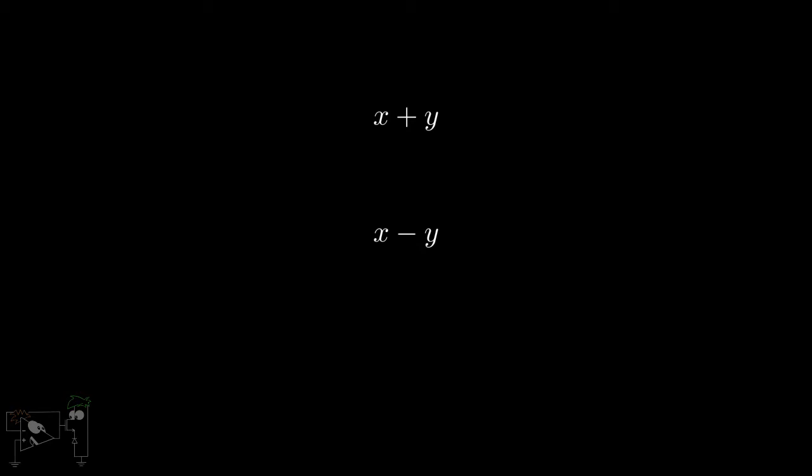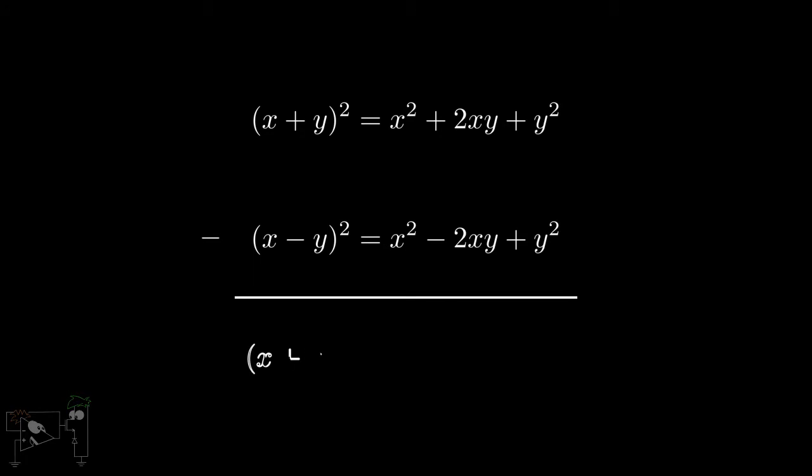Hey! We know how to do this. We just square these two and take the difference. What we get is 4xy and dividing this by 4 gives us xy. Well this is some real solid progress. We just have to square the outputs of the summing and difference amplifier, take the difference and scale down the result by 4.